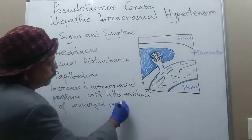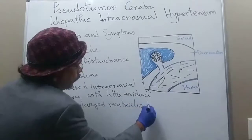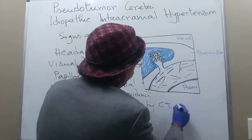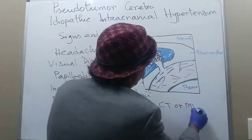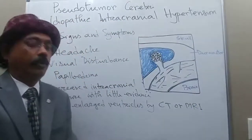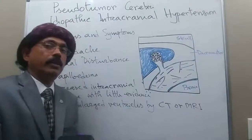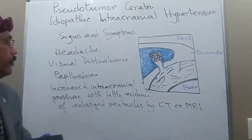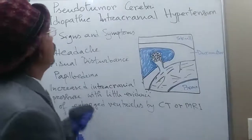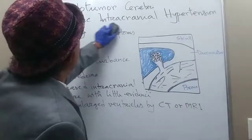There is increased intracranial pressure with little evidence of enlarged ventricles on CT or MRI. So there is certainly high intracranial pressure, but the ventricles are not very much enlarged. There is headache and visual disturbances. Now, how to manage a patient of pseudotumor cerebri?